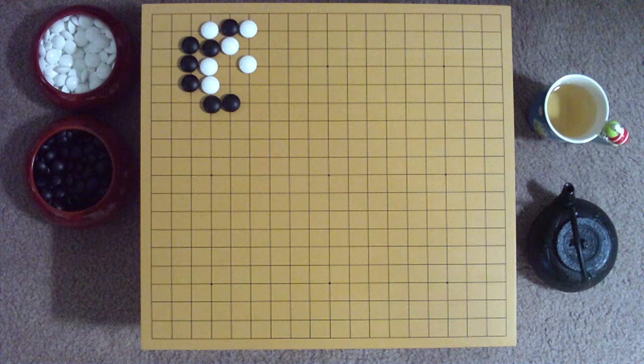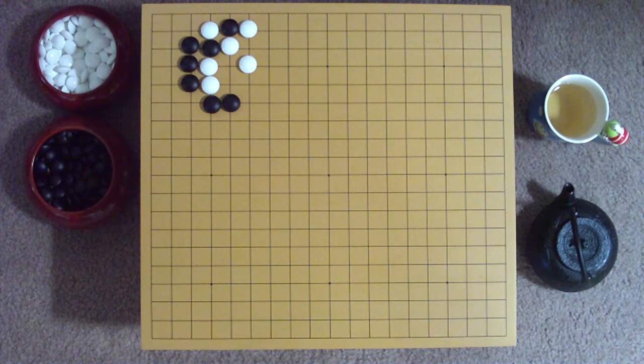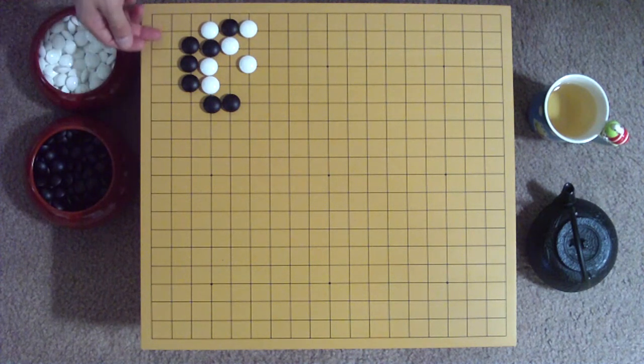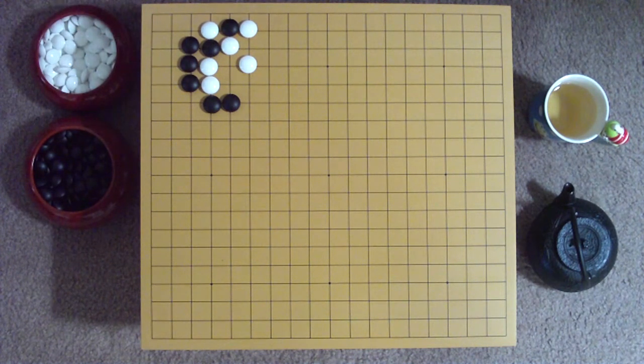As you can see, White's starting off the basic avalanche joseki tends to offer Black a decent amount of territory and side, in return for a wall facing the center.